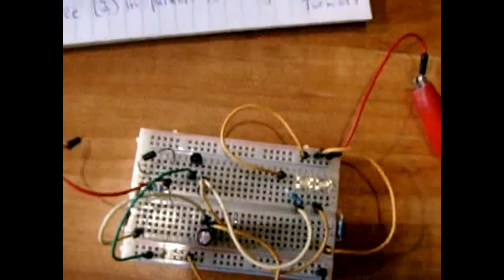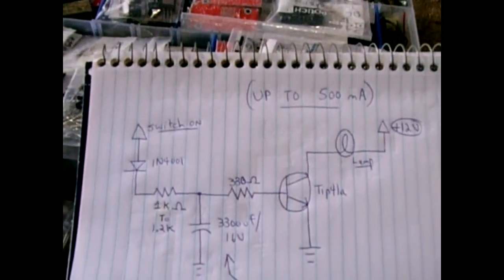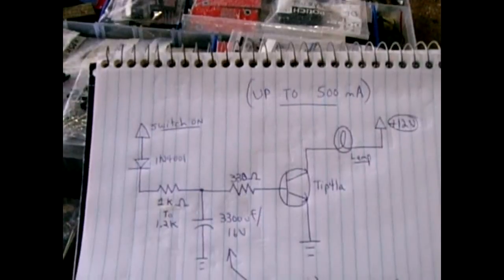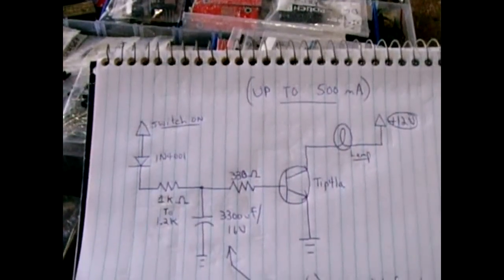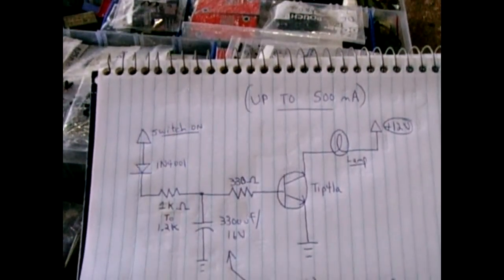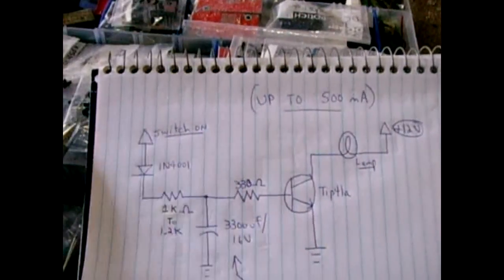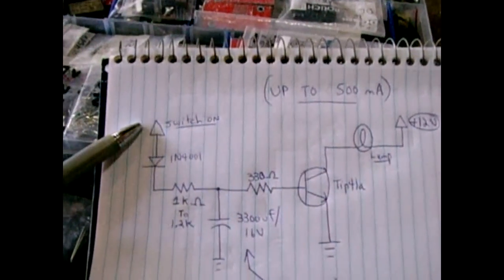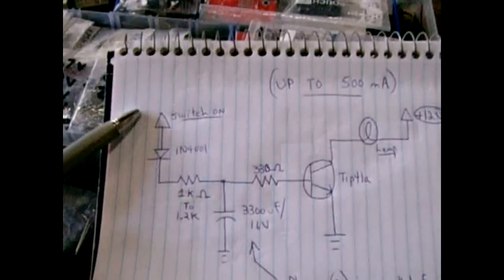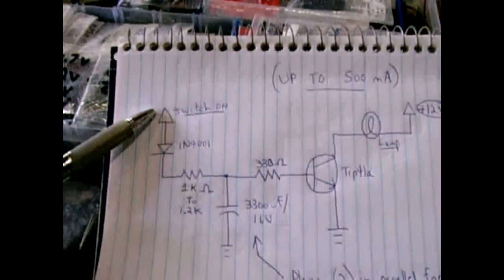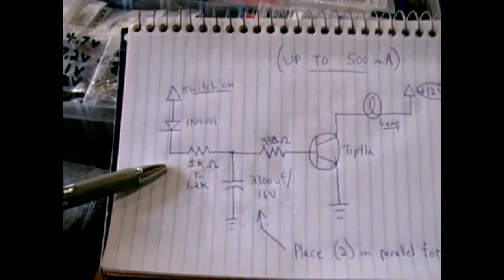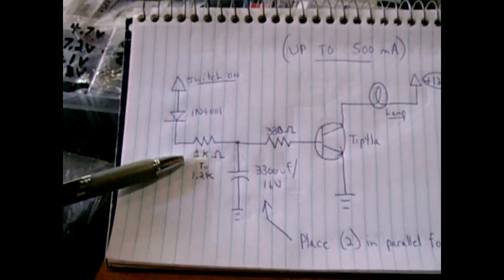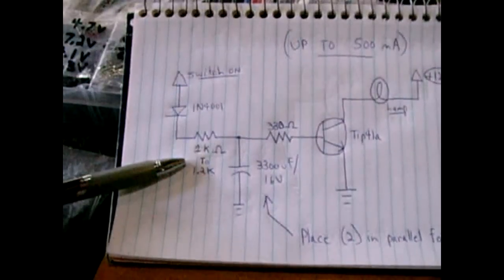Now I'm going to show you a different circuit. This is the schematic if you're going to want to power an incandescent lamp such as a dome light in your vehicle up to a maximum of 500 milliamps. This circuit will work just fine. You have your switch power going to the bulb originally. You're going to take that line and connect it to this diode. It's going to feed through a 1k to a 1.2k ohm resistor.